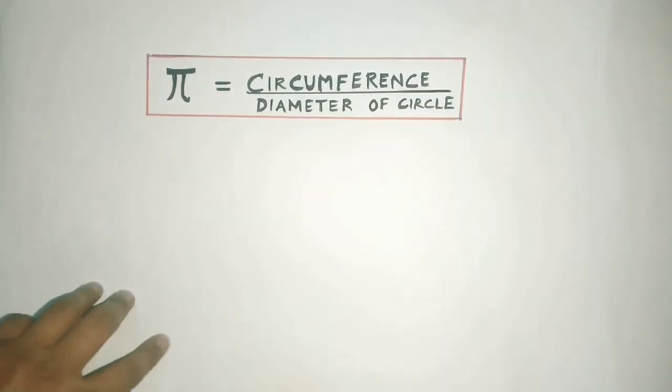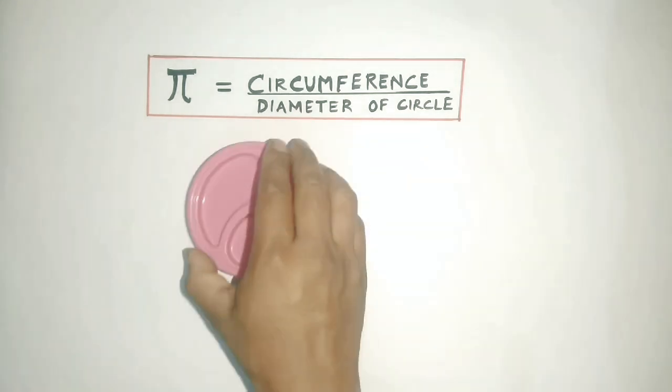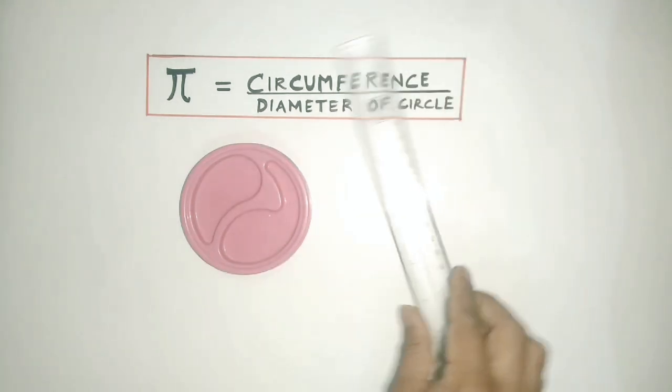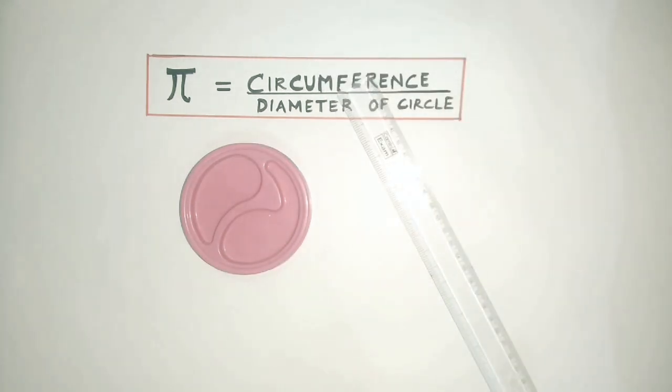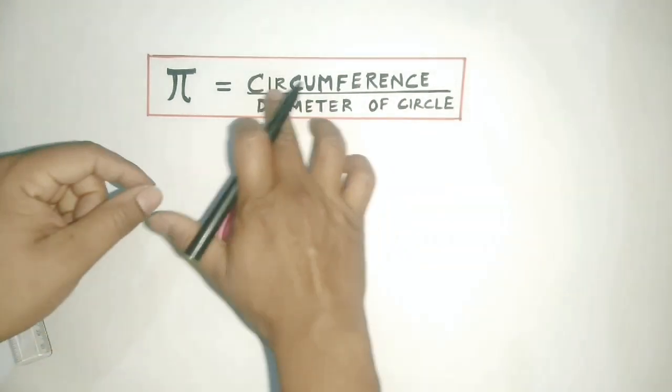So let's do an activity and try to find out the value of pi. For that purpose, I use the following things: a solid shape which represents a circle, a ruler to measure the circumference as well as diameter, and a thread.